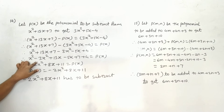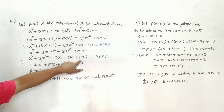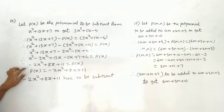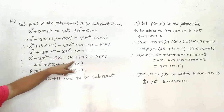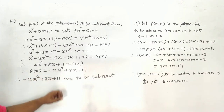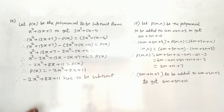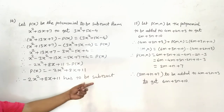Collecting like terms: x² - 3x² = -2x², and 13x - 5x = 8x, and 7 + 4 = 11. Therefore, p(x) = -2x² + 8x + 11. So -2x² + 8x + 11 has to be subtracted.